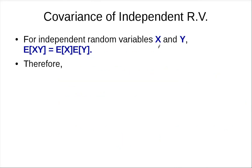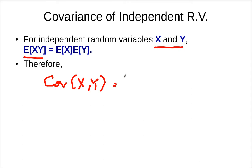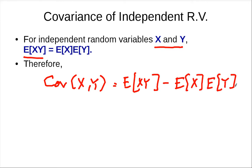Now let's look at the covariance of independent random variables. For independent x and y, we know that the expected value of the product equals the product of the expectations. Therefore, using the covariance formula — expected value of xy minus the expected value of x times the expected value of y — these two terms are equal, so the covariance is zero. This measures how they behave relative to their means, and if there are no correlations, the covariance is zero.